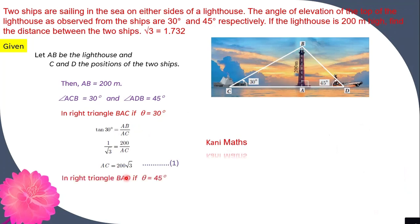In right angle triangle BAD, the theta is 45 degrees. So tan theta is equal to opposite side by adjacent side. Tan theta is equal to AB by AD. Tan 45 degrees is 1. AB is equal to the same distance.